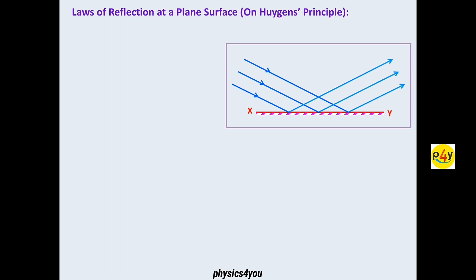Laws of reflection at the plane surface by using Huygen principle. We consider that XY is a plane surface, we consider a mirror. And this is incident rays, it reflects the reflected rays. We consider that AB is a wavefront, and for reflected rays we consider that CD is a normal, N is a normal. Angle of incidence I, angle of reflection R. AB is an incident wavefront, CD is a reflected wavefront, and XY is a reflecting surface.